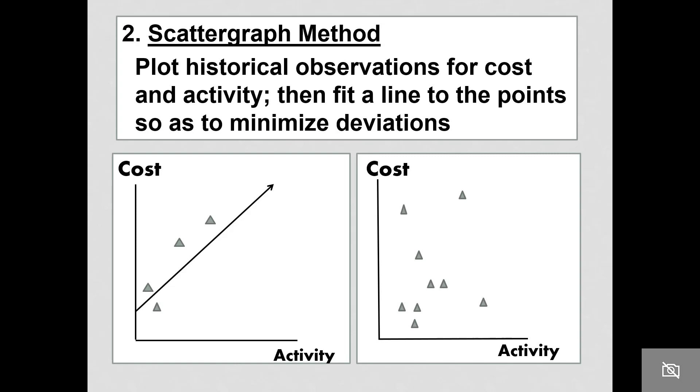This method is especially useful if we were to graph data that looked like this. It would be very difficult to fit a line to minimize the deviations, so we might assume that the cost is not really related to the activity we have measured. This would tell us we're on the wrong track.